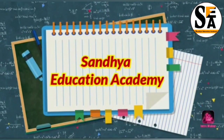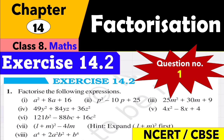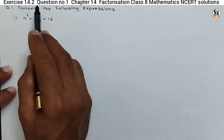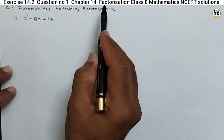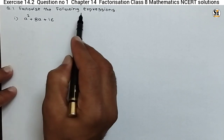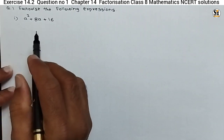Hello dear all, welcome to Sunday Education Academy. I am Santosh. In this video we will see question number one of Exercise 14.2, Chapter Factorization, Class 8 Mathematics. We will see how to use identities to find the factors of a given expression. In this question, we have to factorize the following expressions — there are eight sub-questions we will see one by one.